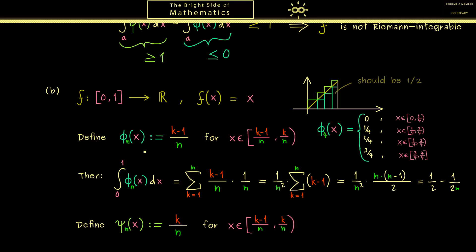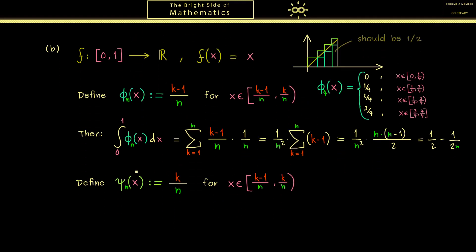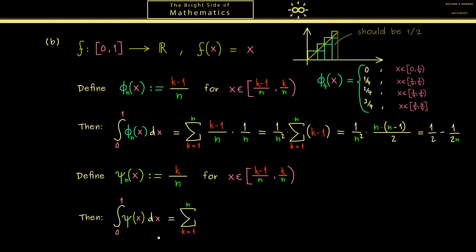And indeed in the same way as before we can calculate the integral. Again it's just a step function so we add up all the areas of the rectangles. And now the only difference from before is that the height of the rectangles is slightly larger. Still here we can pull the factor 1 over n squared out of the sum. And the only thing that remains is the sum of the first n numbers.